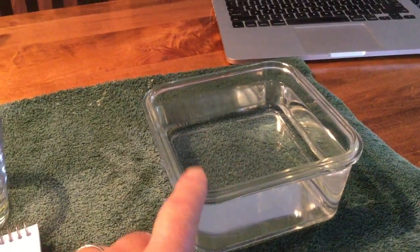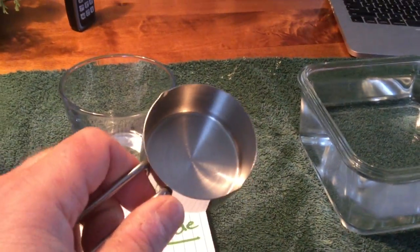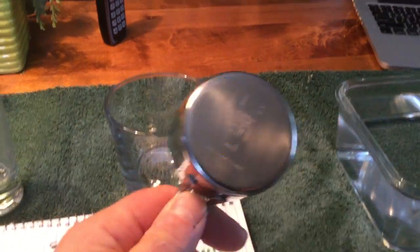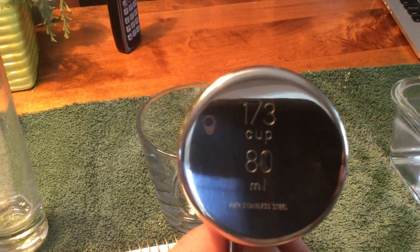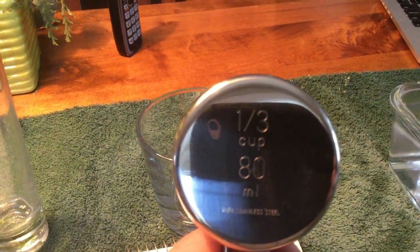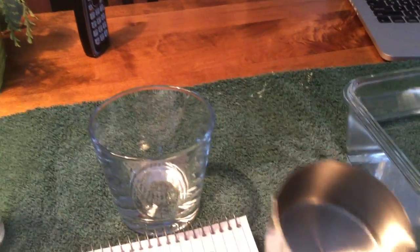And so what I have is I have a little container of water here. And I have a little measuring thing. If we look on the back here, it shows this is a third of a cup, or 80 milliliters. So that is the capacity of this little container.